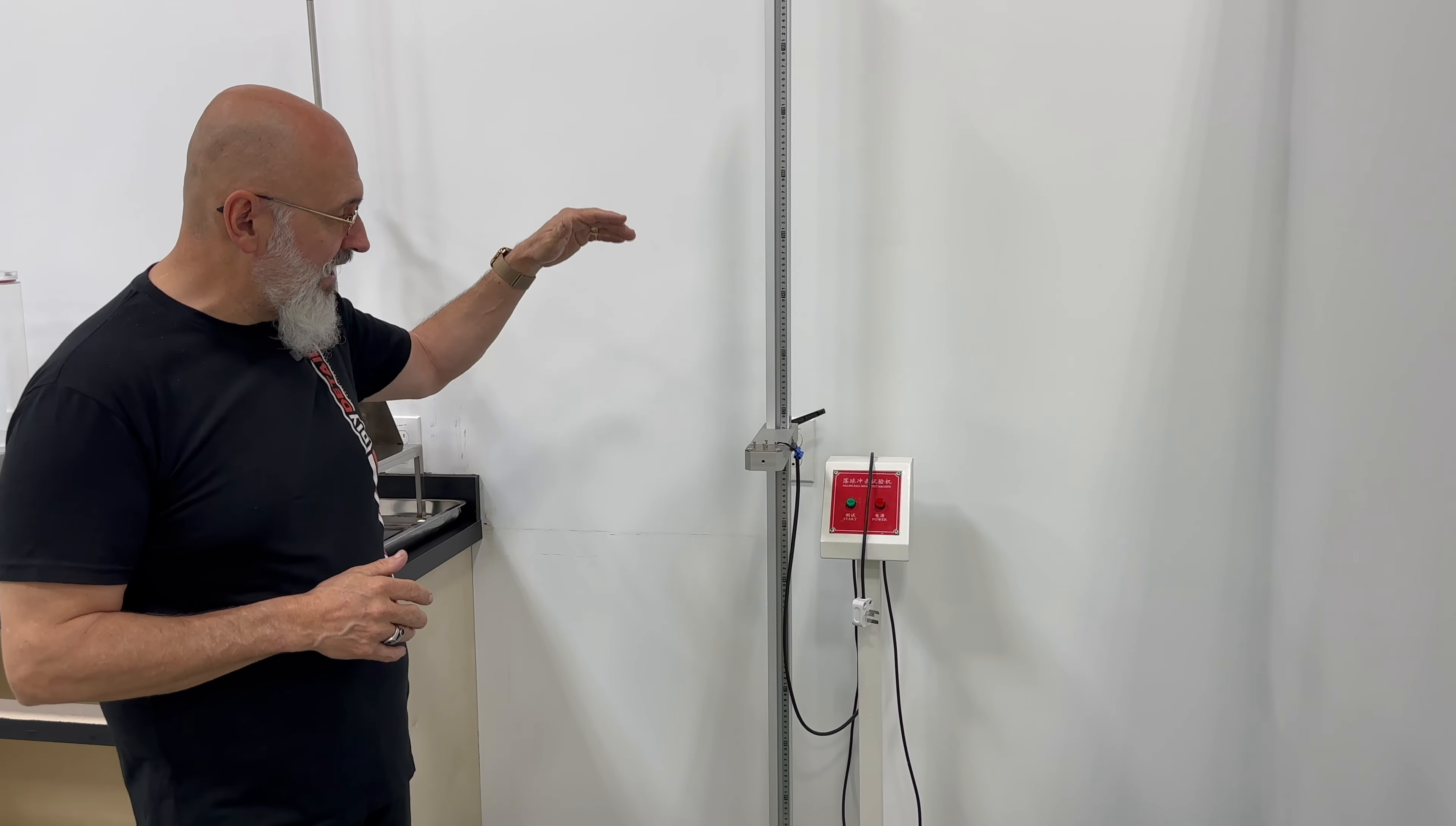The Tabor style abrasion tester is basically to give you the durability of a coating versus abrasion. And this machine does that more specifically for industrial coatings like the C6 industrial coating, but the DIY coatings have survived this as well.